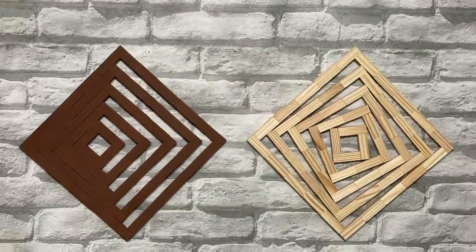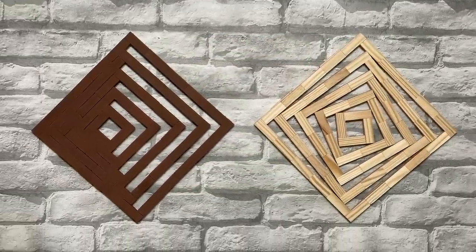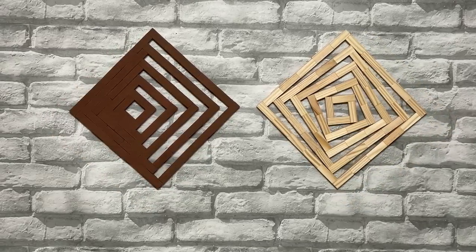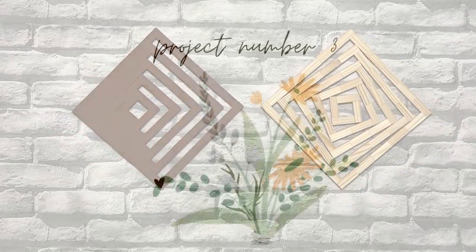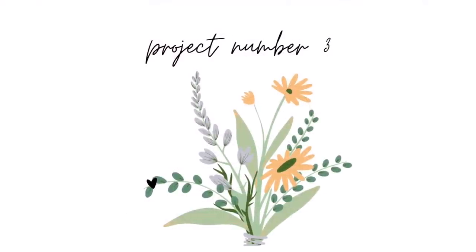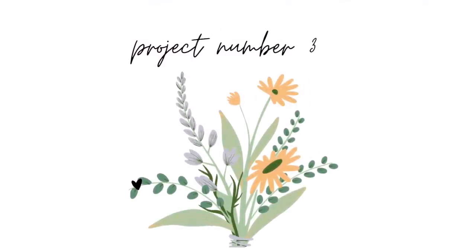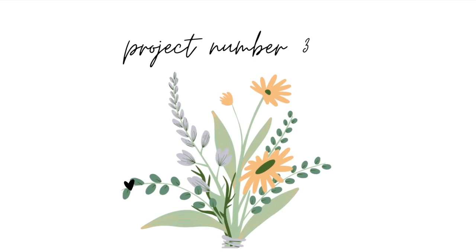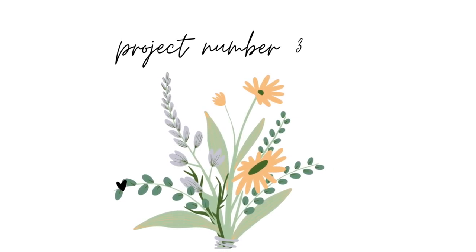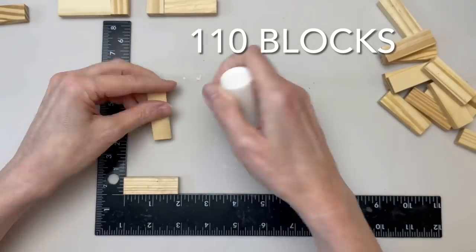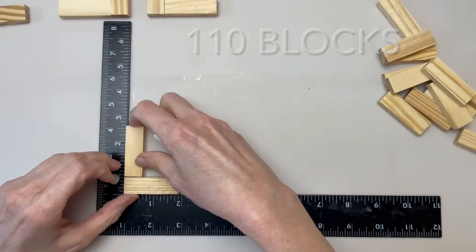Fraternal twins. Project number three is either a small or large lantern. The small one is 110 blocks. The large will be 220. Start by making four black rectangles like you see in the video.